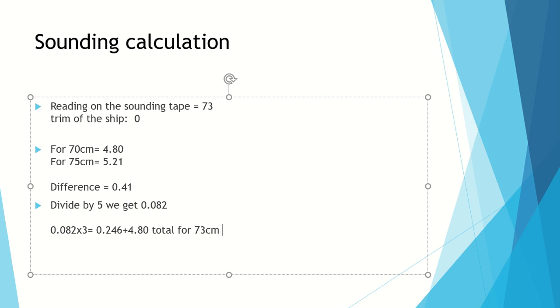So total for 73 centimeters sounding you will get 5.046 meter cube. This is the volume of fuel oil in that tank.